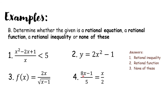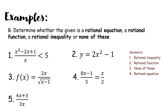Number 4: 4x minus 1 all over 5 equals x over 2. This is a rational expression with an equality sign and another rational expression — therefore, this is a rational equation. Lastly, 4x plus 3 over 3x has no equality sign and no inequality sign, so it is just a rational expression, and our answer is none of these.